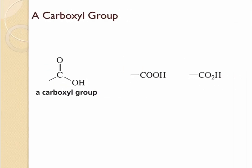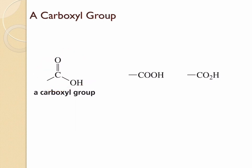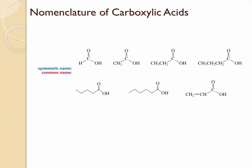Carboxylic acids contain the carboxyl group. This is the general structure for the carboxyl group, but it can also be represented as COOH or CO2H. Let's take a look into the nomenclature of some common carboxylic acids. We'll find the IUPAC name as well as the common name for these compounds.